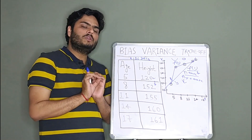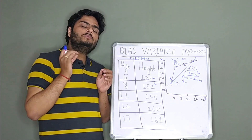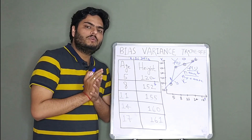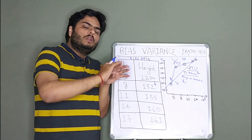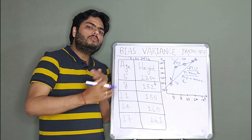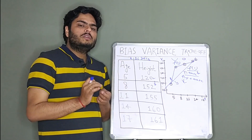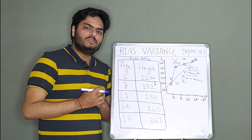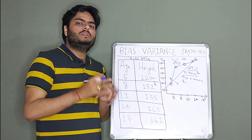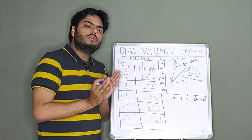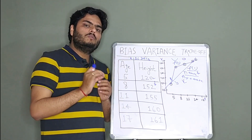To identify high bias models, think about which functions assume a form. Linear regression assumes a linear relation between x and y; logistic regression assumes a linear relation between the log-odds and mx + c. Any model with an assumed form is a high bias model. High variance models include decision trees, SVM, and k-nearest neighbors — these do not assume the form of the data. High variance models have low bias, and high bias models have low variance.